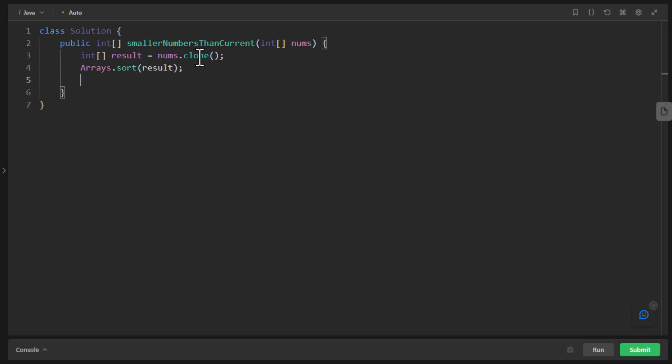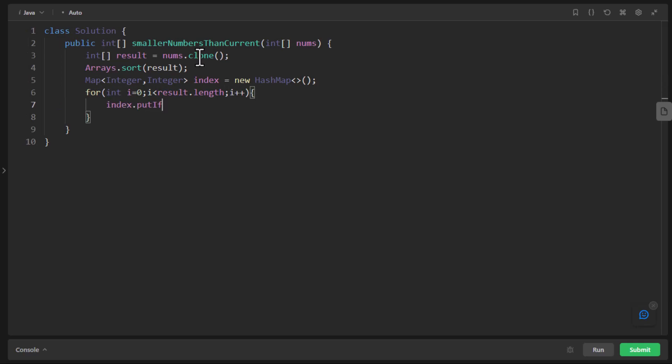And now we need to store this index somewhere. So we'll use a map because it is kind of a key value pair for us. We'll put the value if it is absent. So we're using a function that is provided by the map, you can do an if else check as well for the keys if it is present or not.